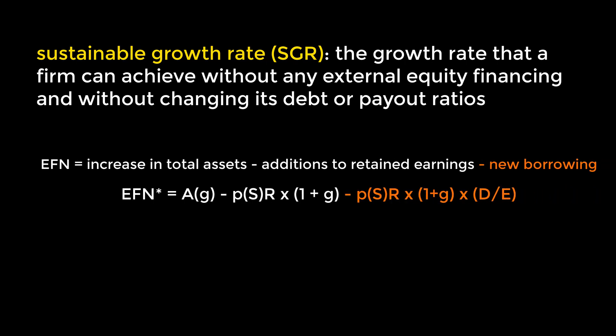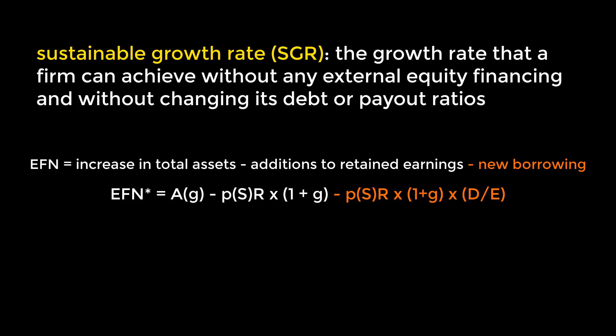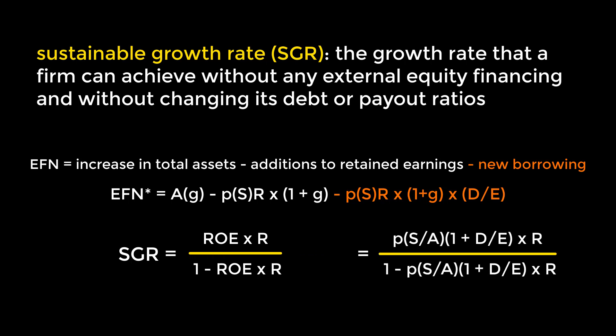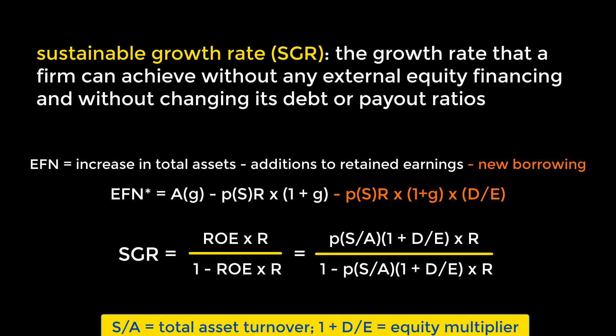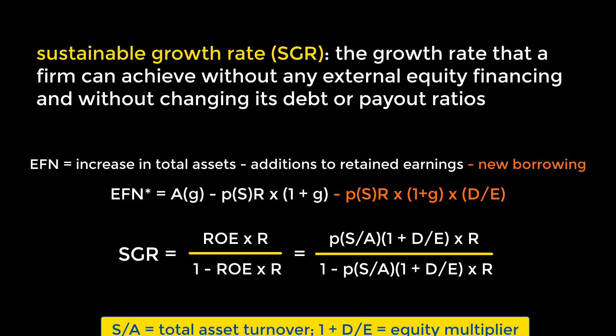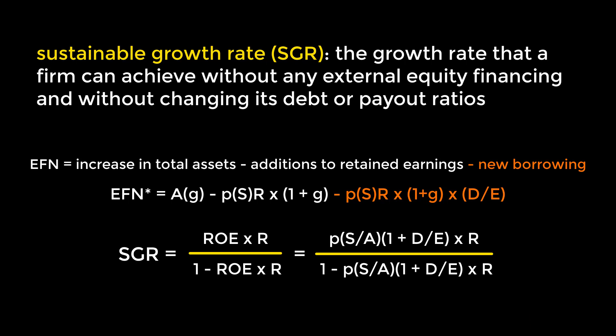This concept as a formula makes a small modification to the previous EFN formula in that it also subtracts new borrowing. Given this modified formula, which can also be used to plot a linear relationship, we can follow the same process as before — set EFN to 0, rearrange to isolate for G, do some algebra — and we have SGR equal to ROE times R over 1 minus ROE times R. To get to the root of what determines growth, we can make use of the DuPont identity, which we spoke about in the previous video. Recall that ROE equals P times S over A times 1 plus the debt-equity ratio. Plugging that into our formula for SGR highlights the various factors that affect growth.